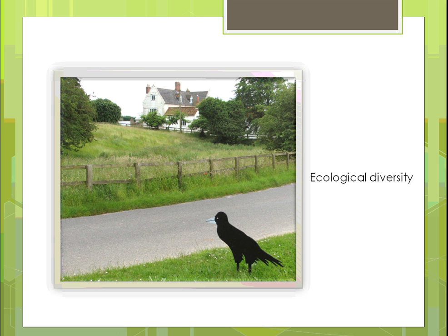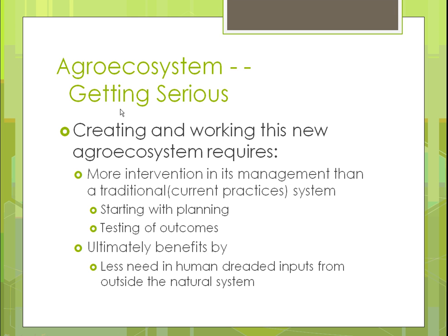Here's just an example of diversity — a farmstead with some pasture land and trees, with crops eventually going in that area. It's showing a diverse system growing on its own, with not much interference from the farmer.